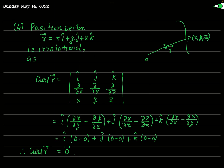Now we take a very good example of an irrotational vector: the position vector R. The position vector of point P, whose space coordinates are x, y, z, with respect to an arbitrary origin O, is R expressed as x·i plus y·j plus z·k. This R is an irrotational vector because curl of R is equal to 0.